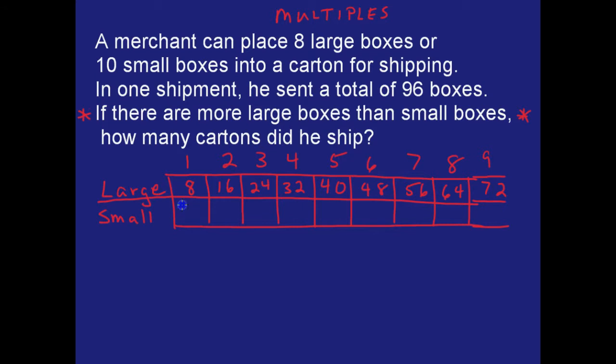So one carton has 10 boxes, two has 20, three 30, and so on. And so what you end up with is a list of possibilities. Looking at that list of possibilities, when you add the large and the small, we need to come to a sum of 96 boxes, and there's only a couple ways that can happen.